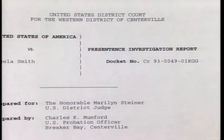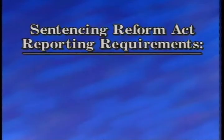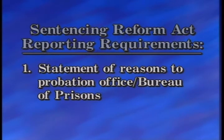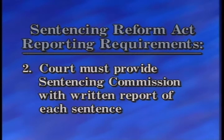The Sentencing Reform Act directs that the pre-sentence report be part of the record on appeal. To preserve the report's confidential status on appeal, the court should order it placed under seal. Finally, remember that there are certain mandatory reporting requirements in the Act. The Act requires that a transcription of the court's statement of reasons be provided to the probation office and, in cases of imprisonment, to the Bureau of Prisons. It also requires the court to provide the Sentencing Commission a written report of each sentence, including demographic data, information about guideline-relevant factors, and such other information as the Commission finds appropriate. The Clerk of Court and the Probation Office will have the latest information on what is necessary to satisfy these reporting requirements.